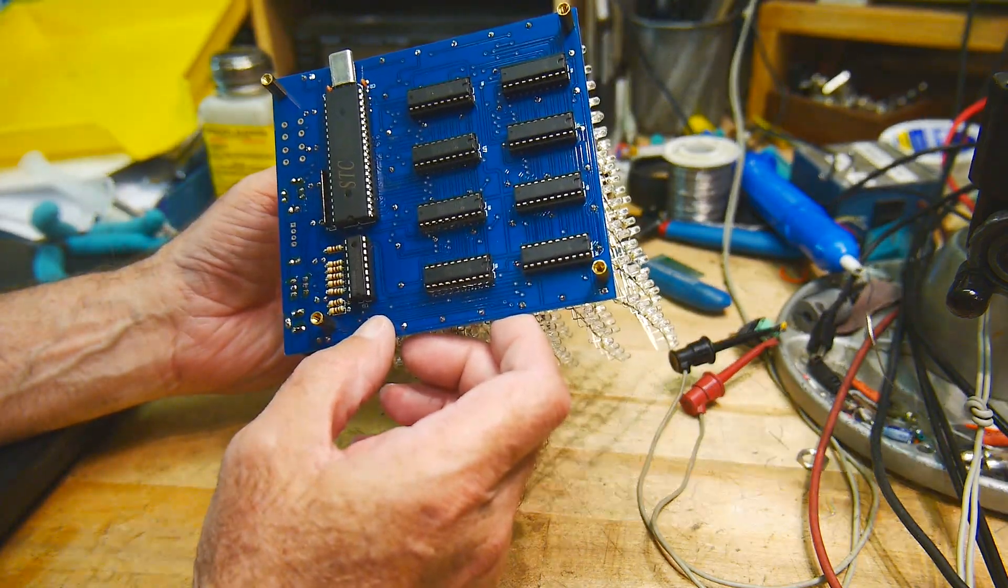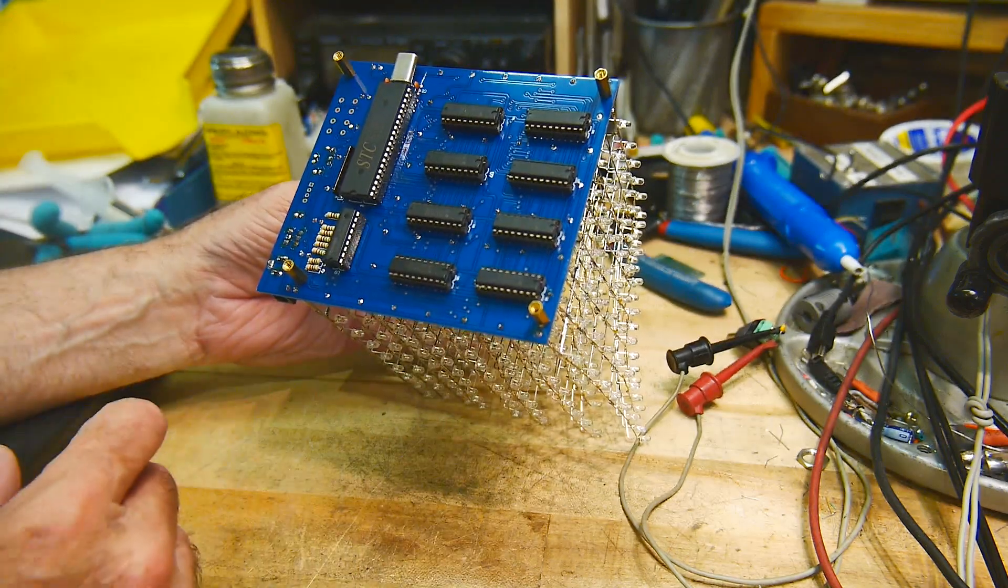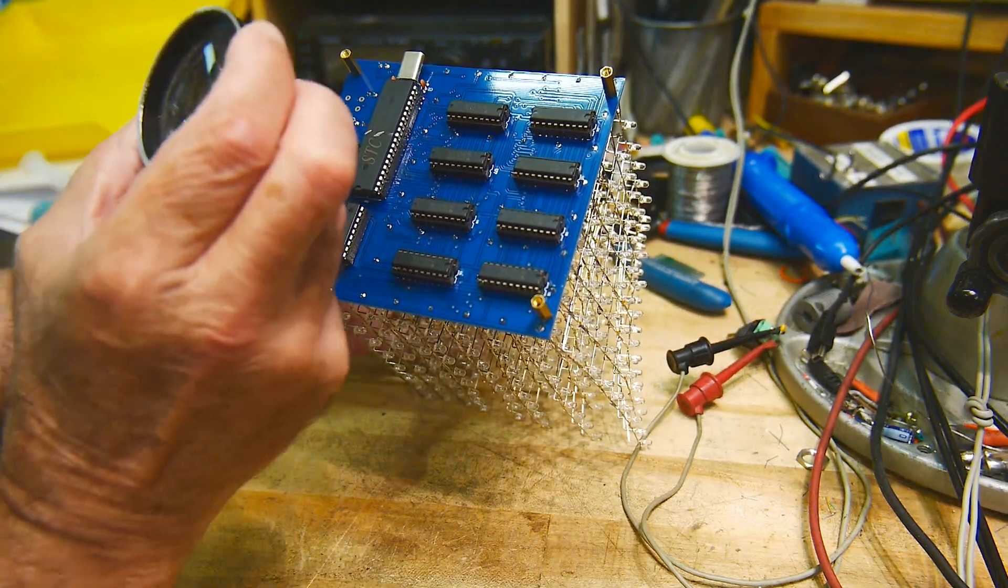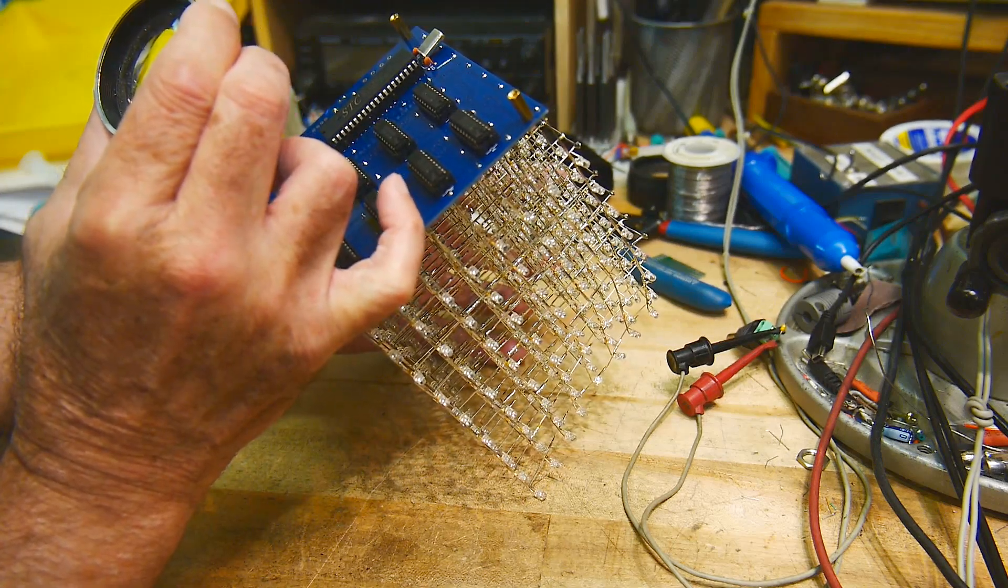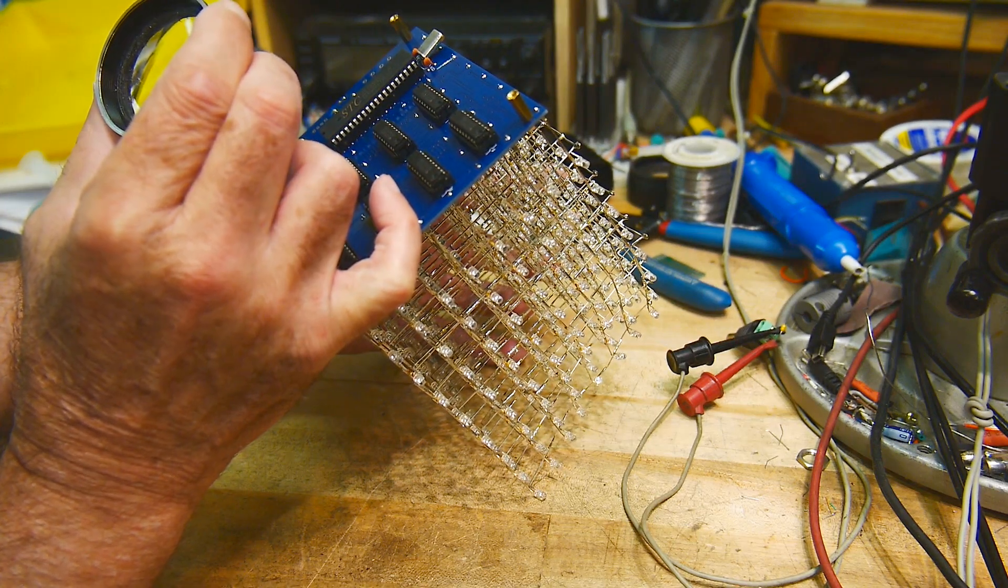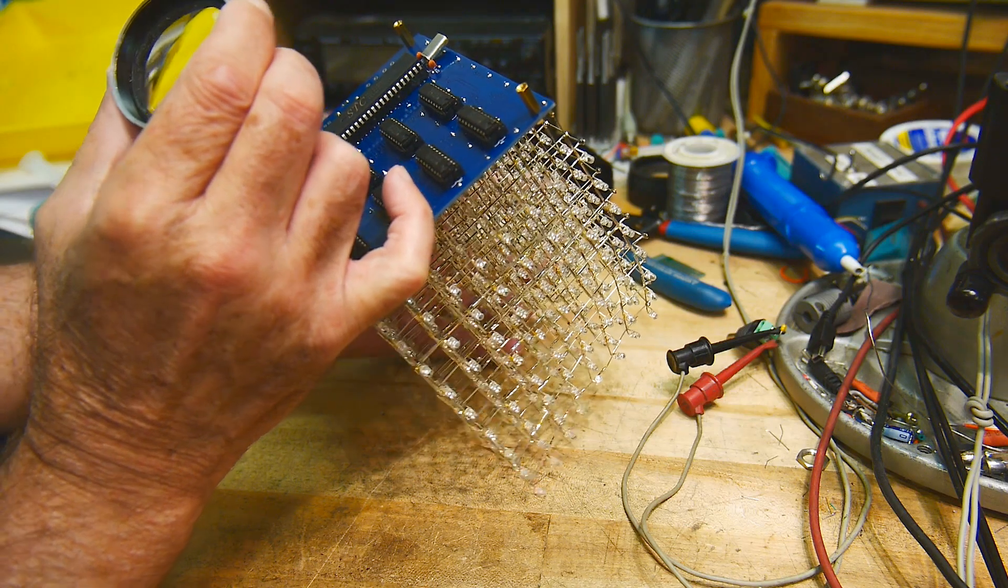So microprocessor, a whole bunch of latches, 8 latches, and then one extra part, which is a Toshiba... I can't see. Where's my magnifying glass? What is that, a Toshiba... oh, it's a ULN2803.